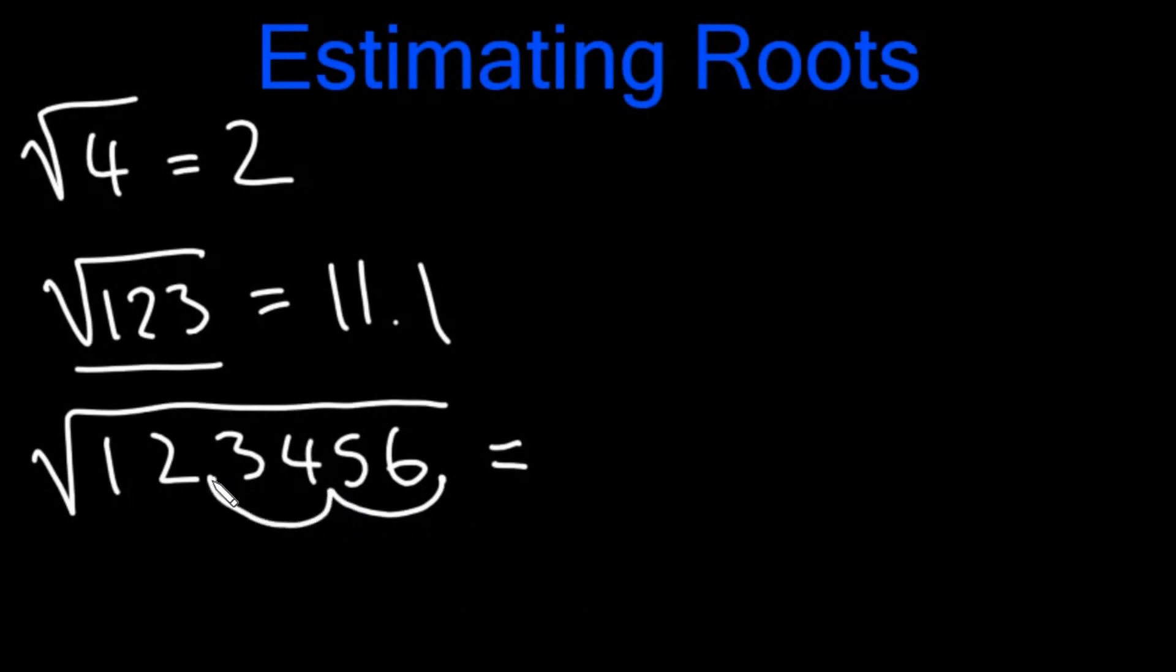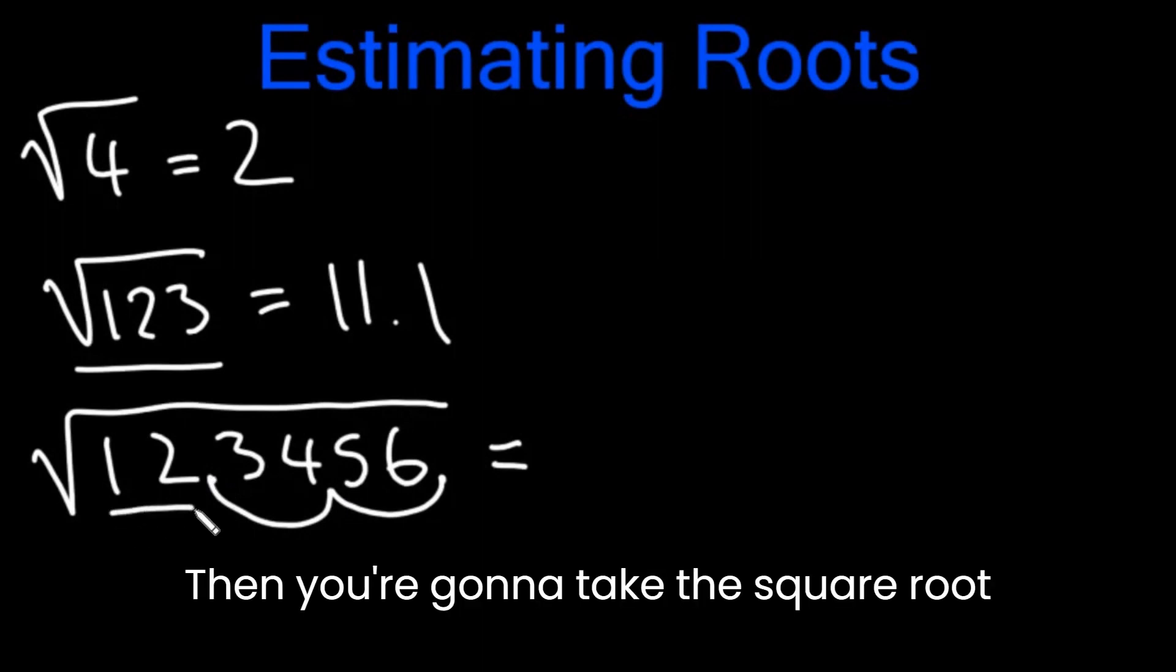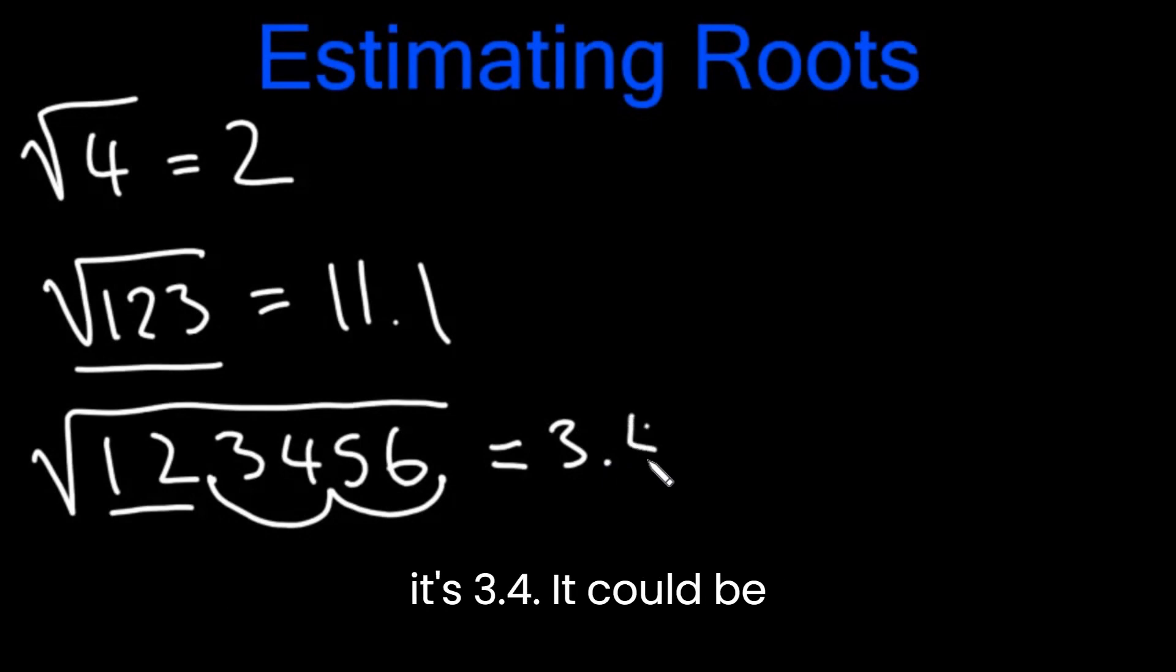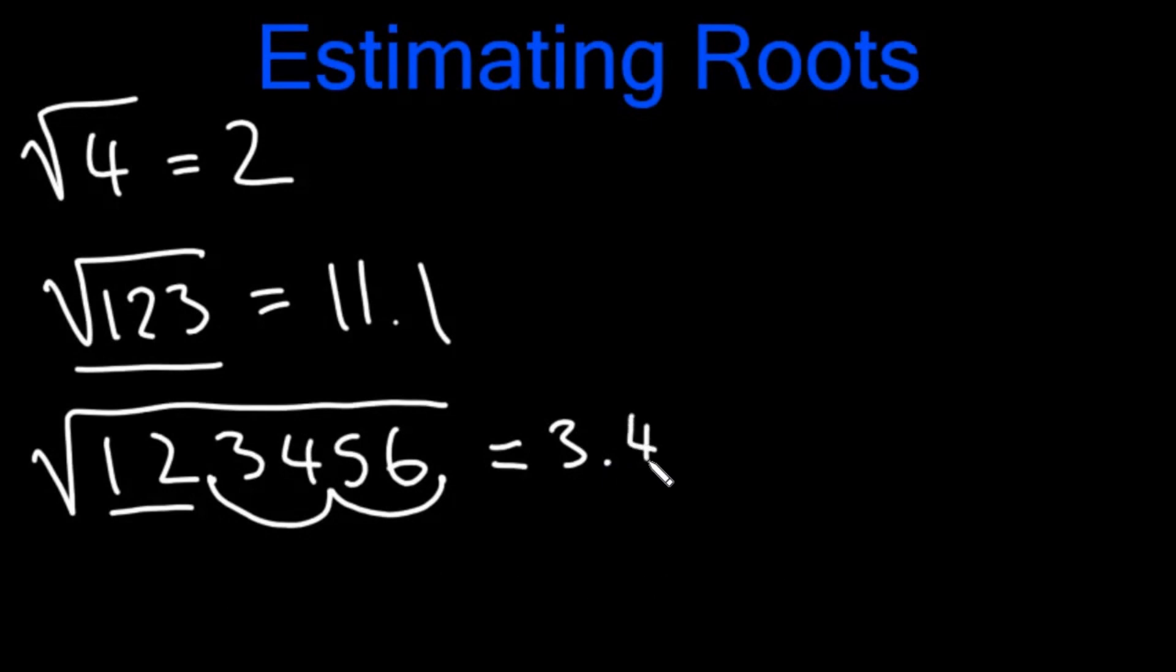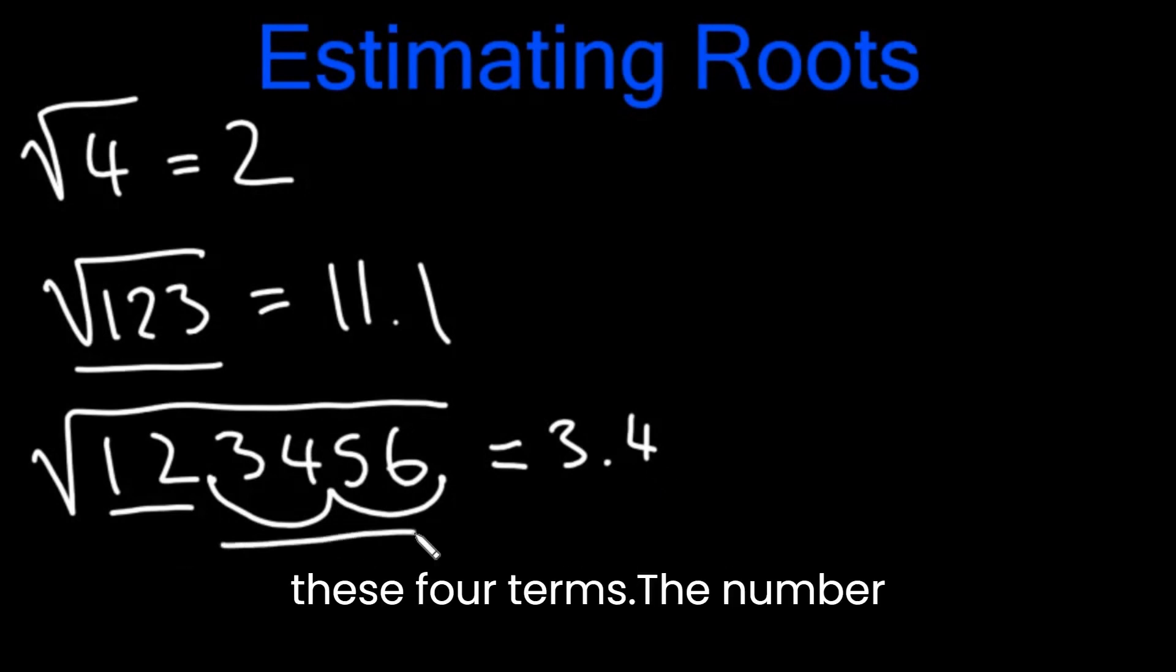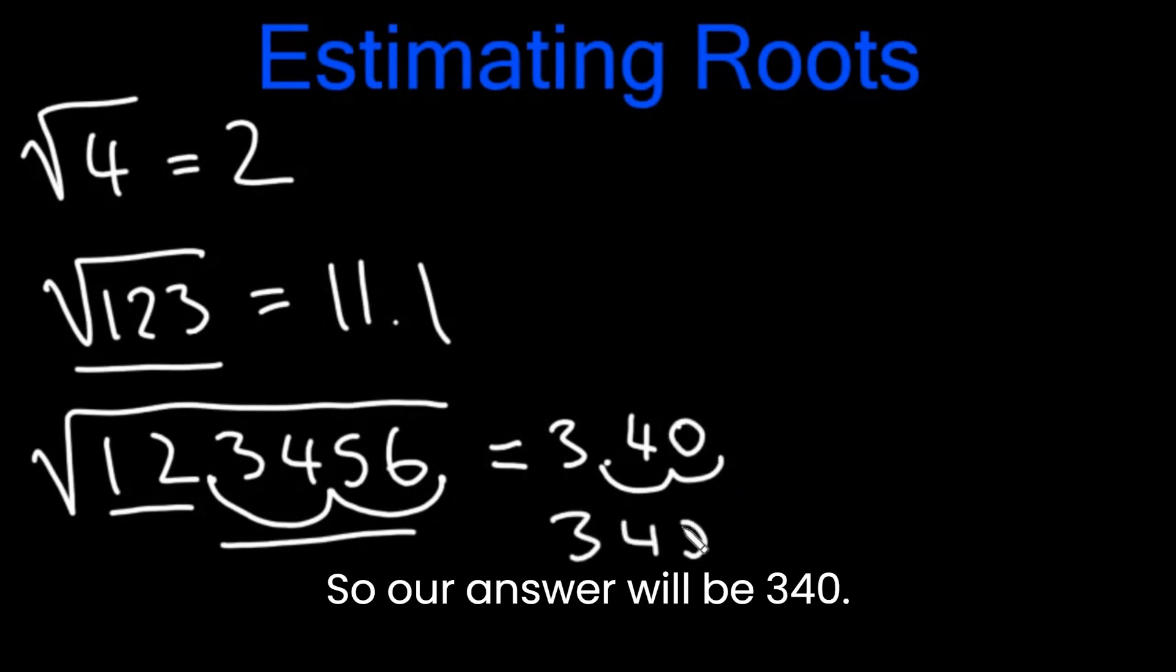You first take two numbers out, then you take the other two numbers out. Then you're going to take the square root of the 12. The square root of 12 is about 3, and we don't actually know what it is, but let's say it's 3.4. It could be something else, but we just want to get close. Then for the terms that we took away, those four terms, the number of times we took away two terms, we're going to add zeros. So our answer will be 340.